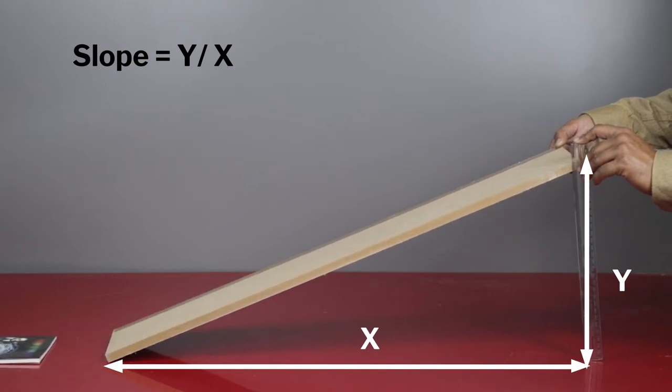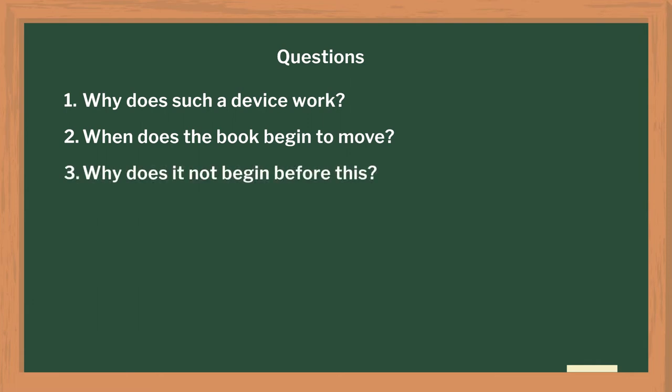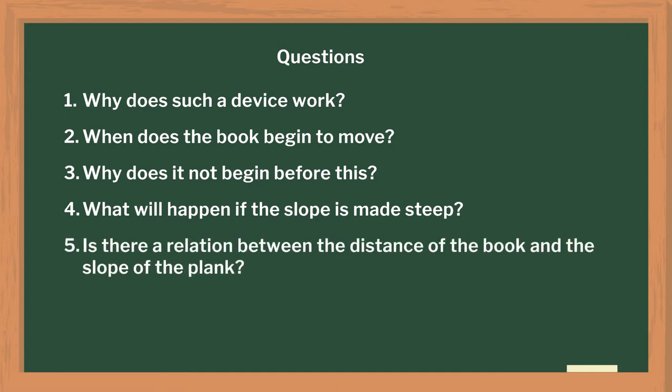My class discussed: Why does such a device work? When does the book begin to move? Why does it not begin before this? What will happen if the slope is made steep? Is there a relationship between the distance of the book and the slope of the plank?